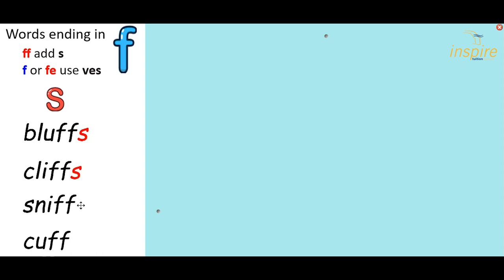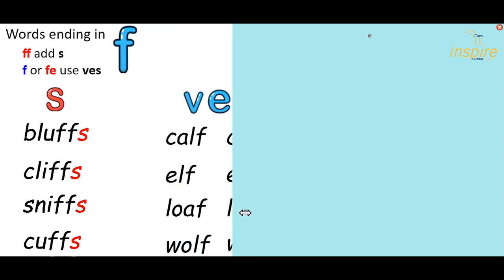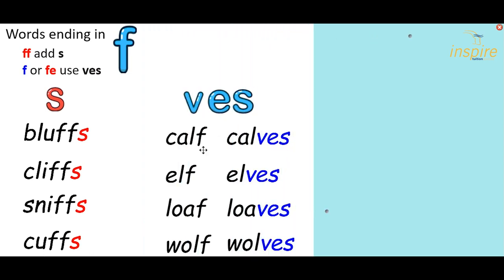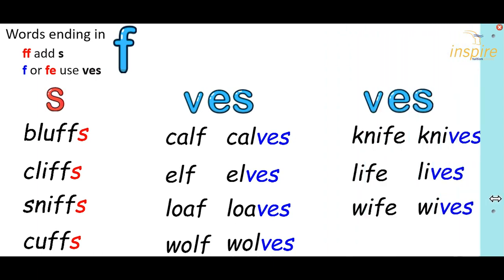Bluffs, cliffs, sniffs, coughs. These words end in F, so we need to change the F to VES. So calf becomes calves, elf becomes elves, loaf becomes loaves, and wolf becomes wolves. These are slightly trickier because these end in FE, but we still change the F and then make it VES. So knife becomes knives, life becomes lives, and wife becomes wives.